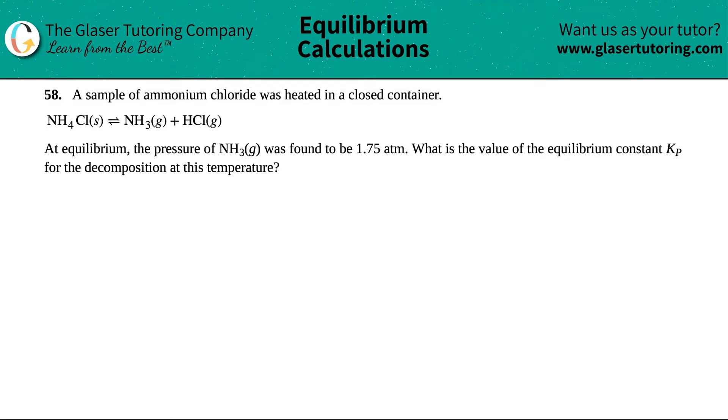Number 58: A sample of ammonium chloride was heated in a closed container. The balanced equation is NH4Cl solid comes to equilibrium with NH3 gas plus HCl gas. At equilibrium, the pressure of NH3 gas was found to be 1.75 atm. What is the value of the equilibrium constant Kp for the decomposition at this temperature? The question is asking for an actual number, a value for the equilibrium constant Kp.